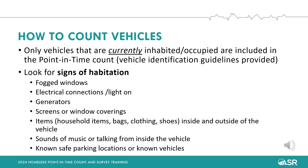Here are some ways to identify vehicles that are housing individuals. We want to maintain a respectful distance, so please do not walk up and look inside the vehicle, knock on vehicle doors or windows, or shine flashlights into the vehicle. Instead, look for signs such as: windows that are fogged, partially open, or blocked; electrical connections or generators; screens or window coverings; items inside and outside of the vehicle including household items, bags, clothing, etc.; sounds of music or talking coming from inside the vehicle; or that the vehicle is in a known safe parking location, which may be designated on your map.